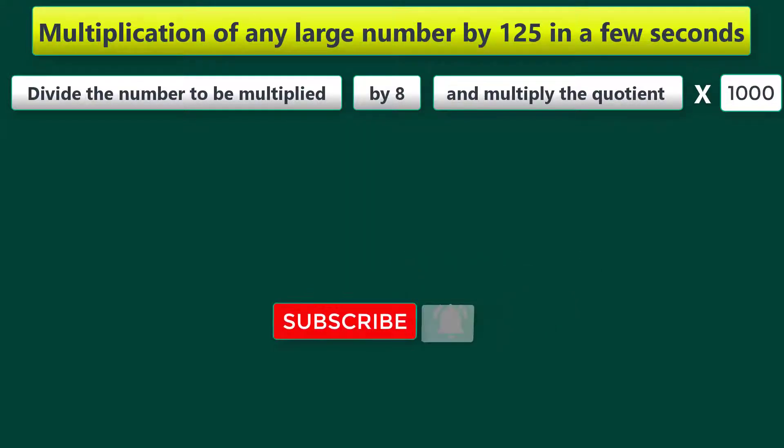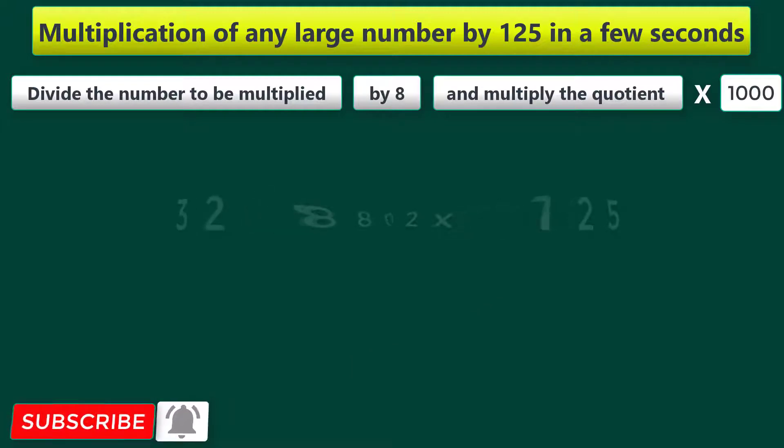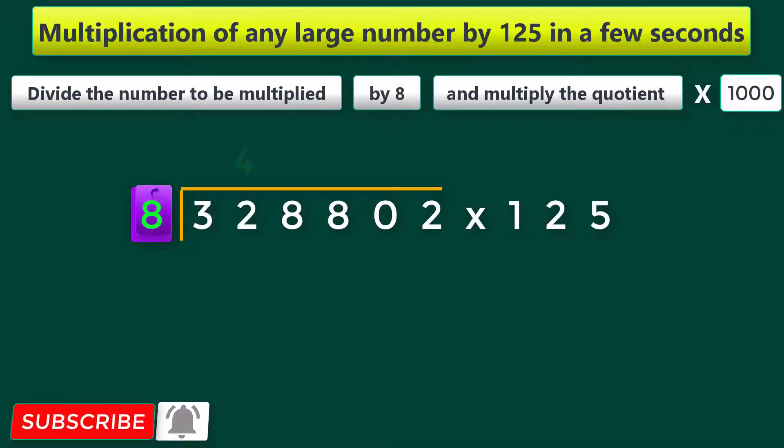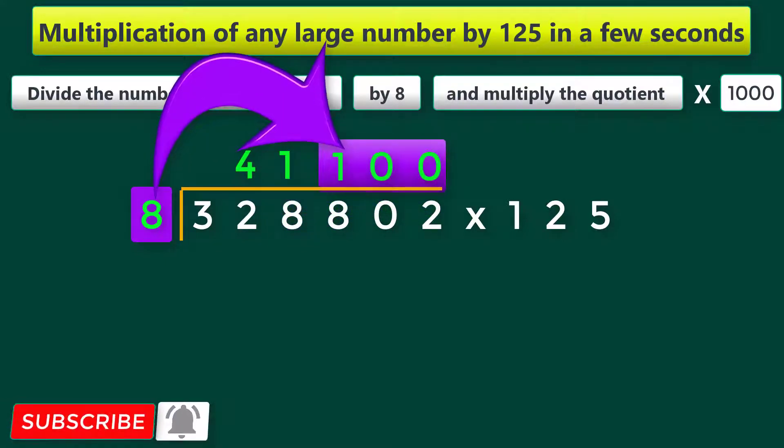For another example, let us multiply the number 3,28,802 by 125. 8 fours are 32. Next, 8 ones are 8. Then 8 hundreds are 800. Remainder 2.